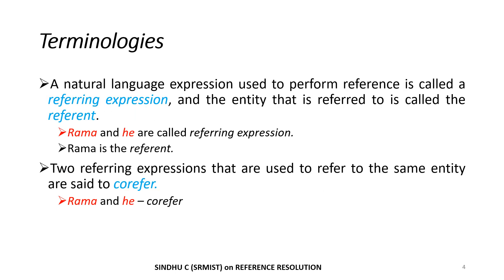Before we go to identifying what are all the problems with references, we will have to discuss what are the basic terminologies involved. A natural language expression used to perform reference is called a referring expression, and the entity that is referred to is called the referent. In our example, Rama and he are called the referring expressions, and the actual entity Rama is the referent. When you have two referring expressions used to refer to the same entity, you call it co-refer. So here Rama and he are both called co-refer — both of them refer to the same thing.